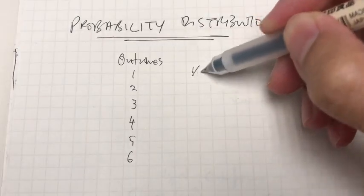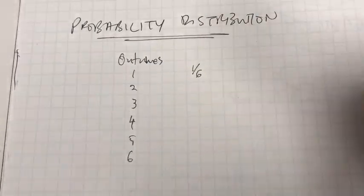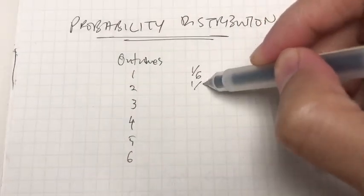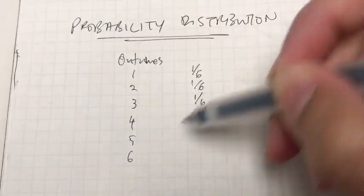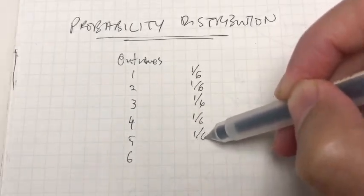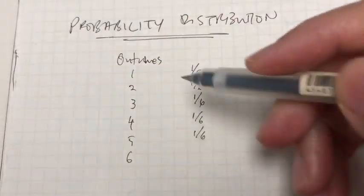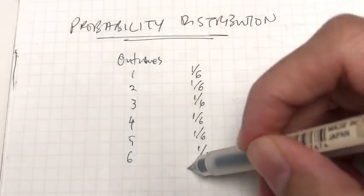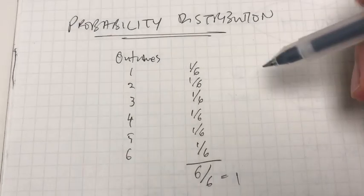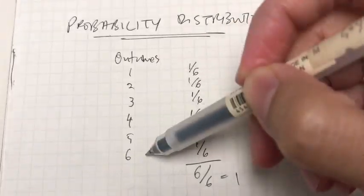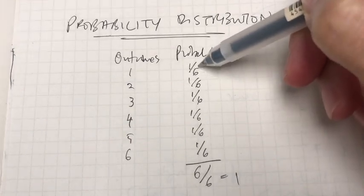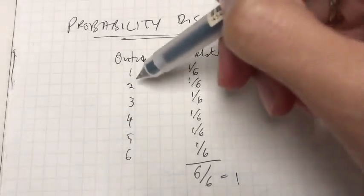What is the chance of getting a one out of the six faces? One out of six. The chance of getting a two is also one out of six. Three, same, one out of six. To get the number four is also one out of six. Five, one out of six. And to get number six is also one out of six. If you were to add all of this, we would get six out of six, in other words, one, 100%. These are basically the probability attached to each outcome.